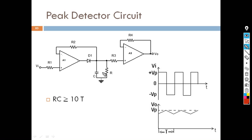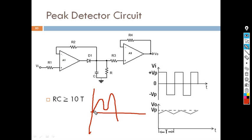Now let's see how this actually works. Let me draw the input. So the input starts from zero, reaches a peak, and the output should detect that peak. Initially, the output is zero — the capacitor is fully discharged.